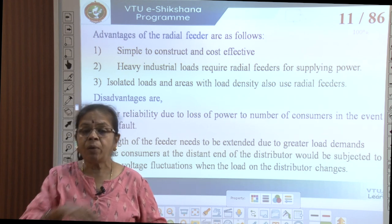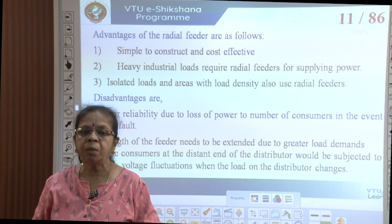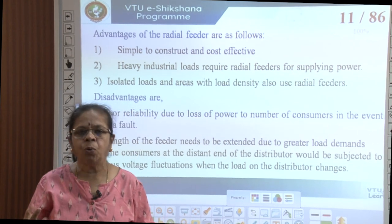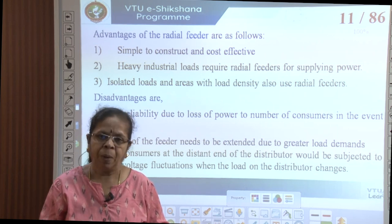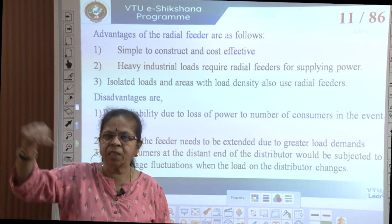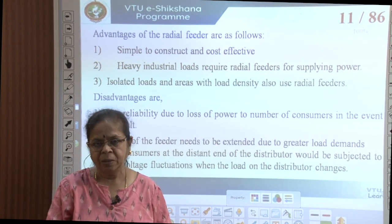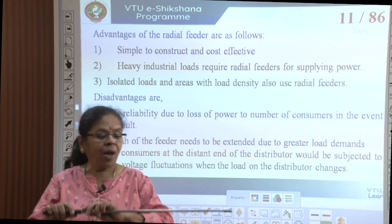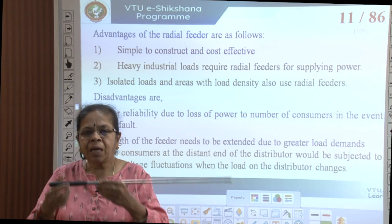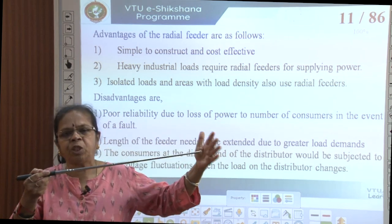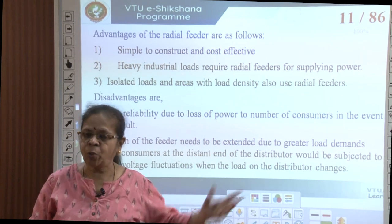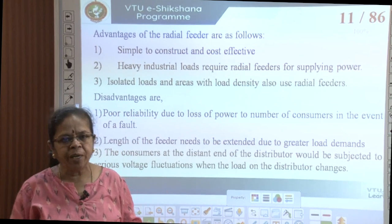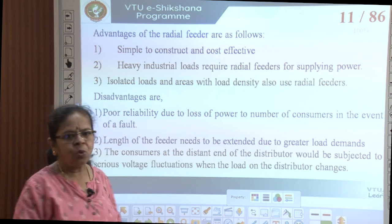In a radial feeder there are no alternate paths, so reliability is poor and there is more likelihood of consumers being without supply in the event of a fault. If the load is further away, longer feeders are needed. Consumers at the far end of the line are subjected to lesser voltages, and voltage fluctuation increases as you move away from the source. Despite these disadvantages, radial feeders are widely used because they are very easy and simple to construct.